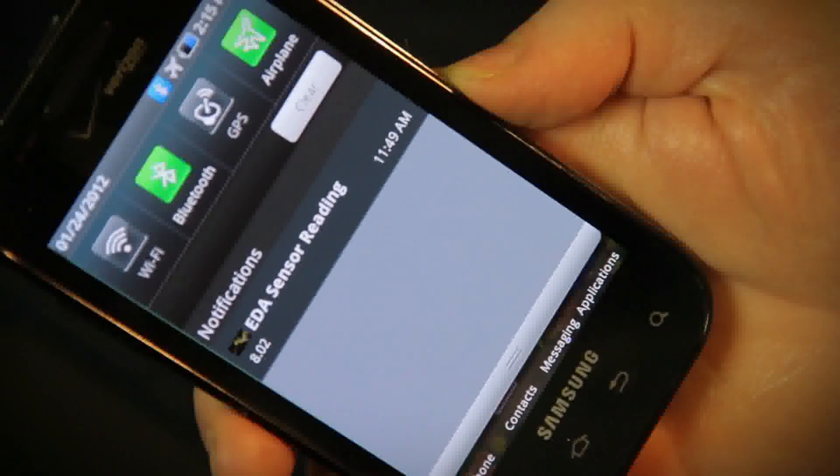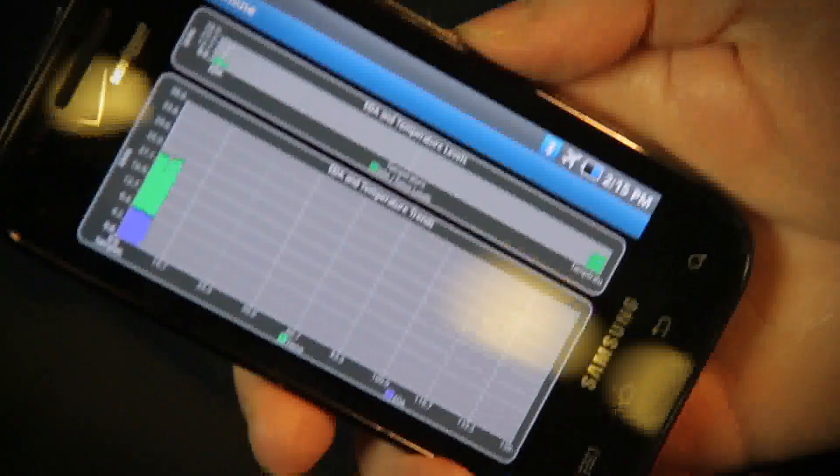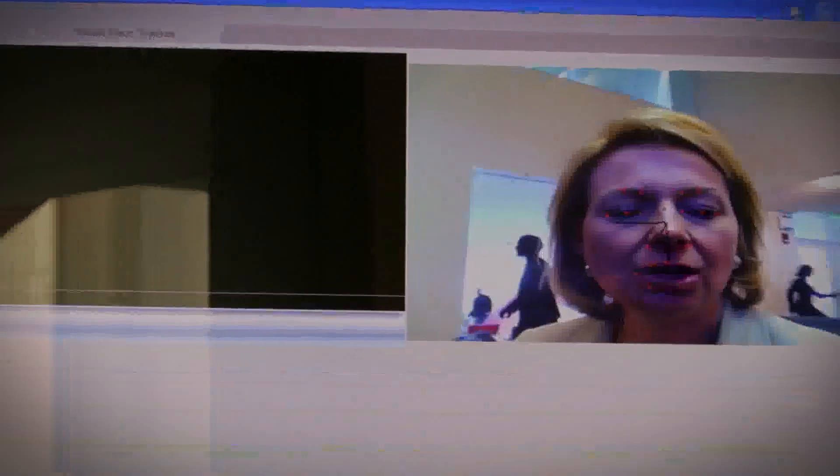So as we build technology that helps us to measure and communicate and understand emotions better, we're also getting insights into what signals in our body are changing that are affecting our health.